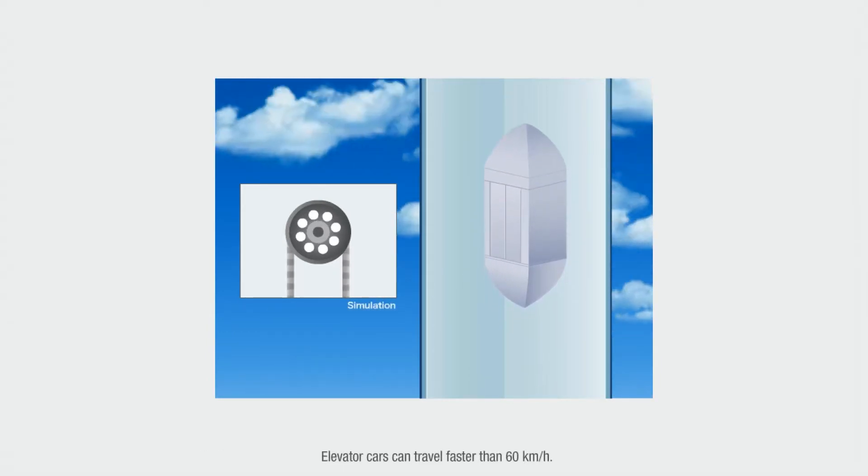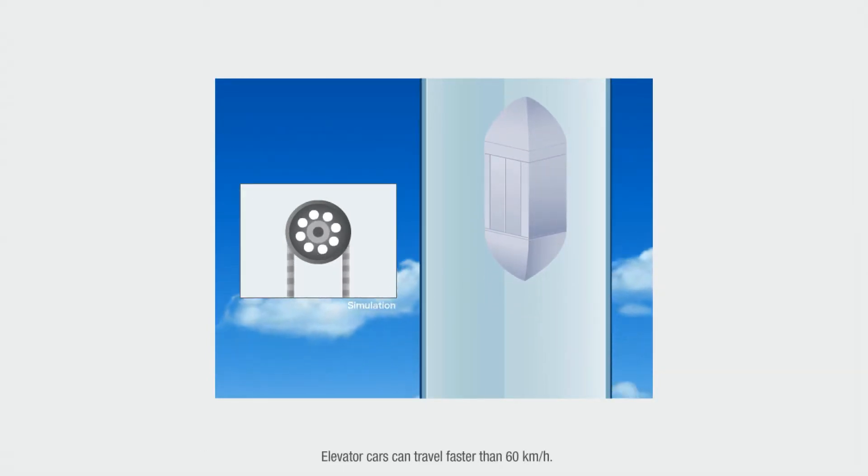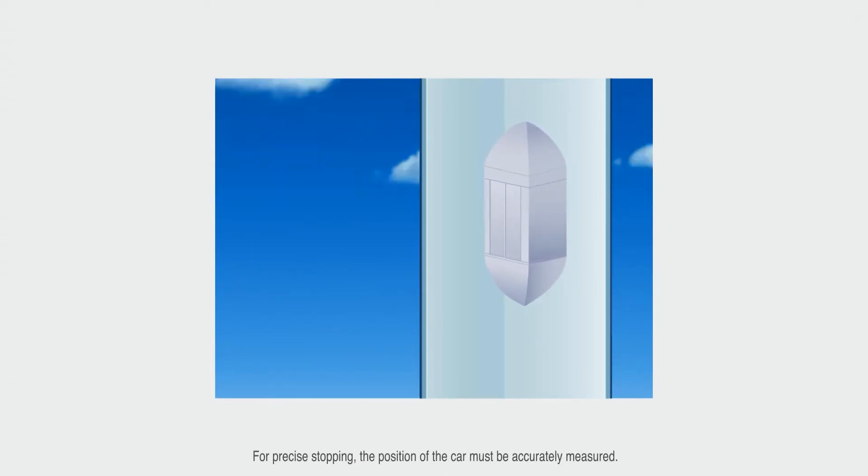Elevator cars can travel faster than 60 kilometers per hour. For precise stopping, the position of the car must be accurately measured.